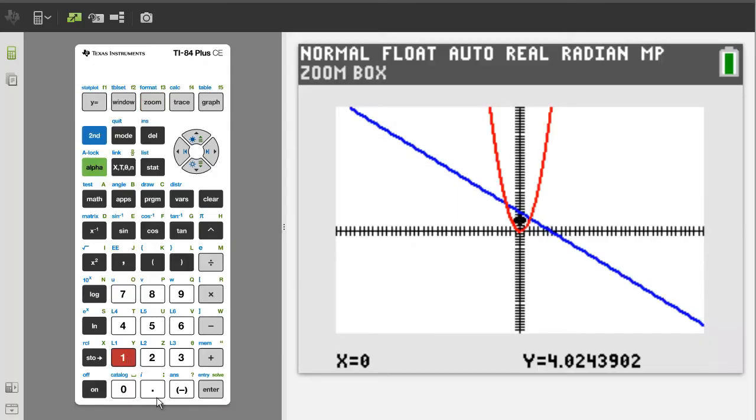We have the blinking cursor, and from here you can move the blinking cursor to the area you want to begin drawing a zoom box. Then press the enter button.